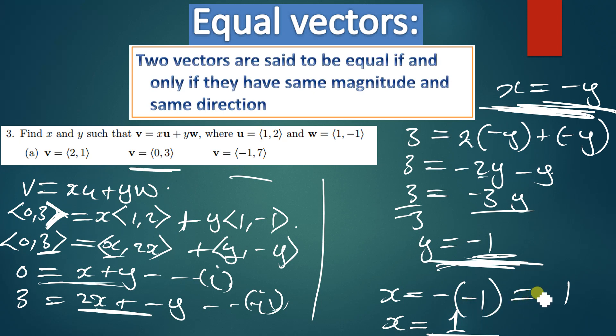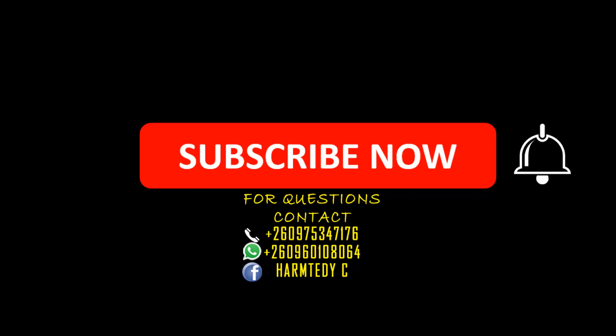This is how you're supposed to work out this question. Make sure you solve the remaining question and submit it as an exercise — I'd like to see how you handle it. You can submit using any of these lines on screen, which are on WhatsApp and Facebook. Don't forget to subscribe and click the notification button. My name is Hamtad. Shalom, shalom.